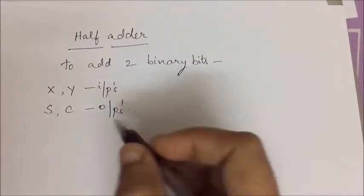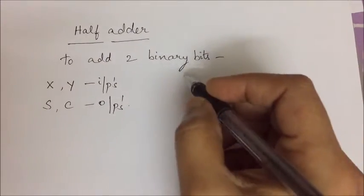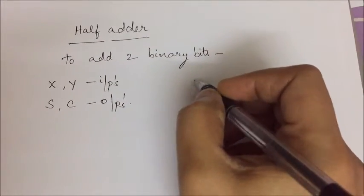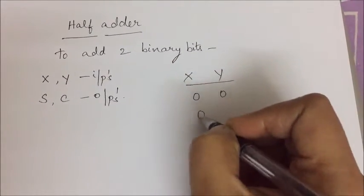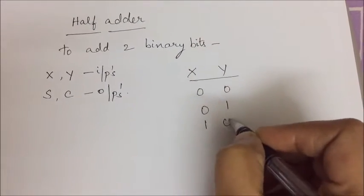When we consider x and y as two inputs we will have four combinations. Those four combinations will be 00, 01, 10, 11.